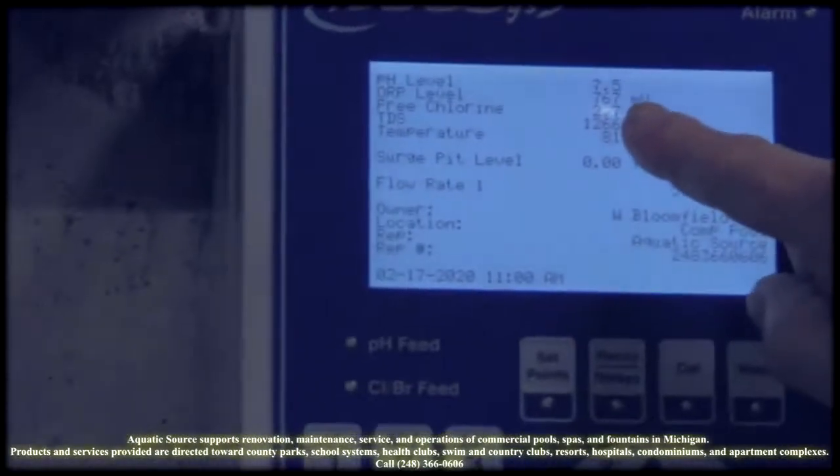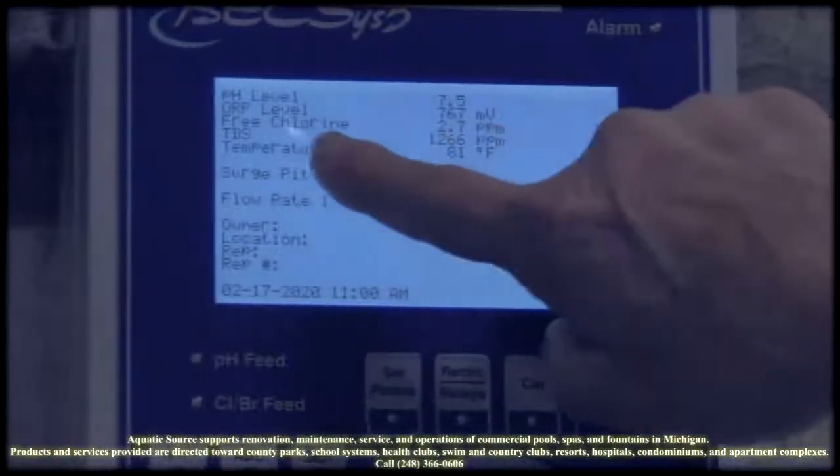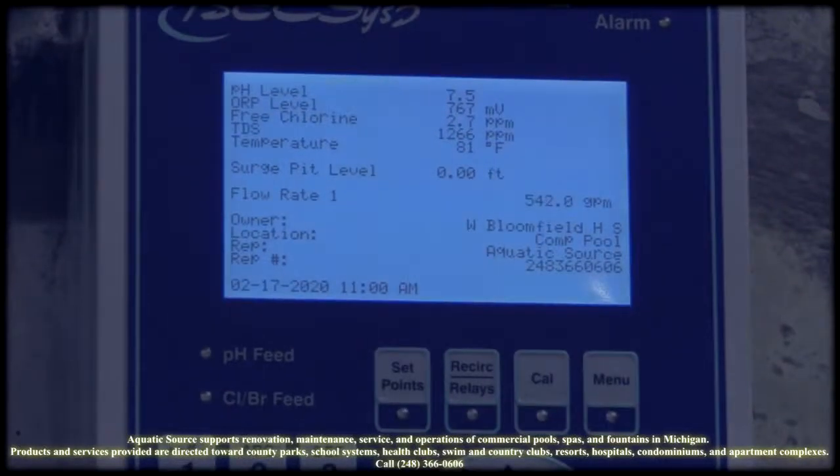On this unit, we are testing for pH and maintaining pH. We're also doing the ORP level to get a reading on how well the chlorine is working. We've got free chlorine, which is what we're testing for to maintain the levels in the pool.